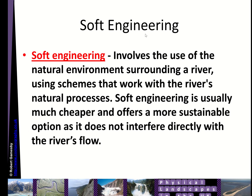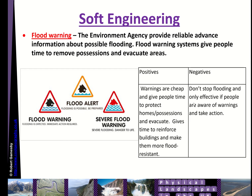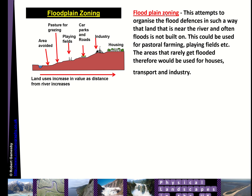Soft engineering is different — it involves the use of natural processes and the natural environment surrounding a river to work with the river's natural processes. It's much cheaper and more sustainable but probably offers less protection than hard engineering. One type of soft engineering is flood warnings. The Environment Agency monitors rainfall and river levels to provide reliable advance information about possible flooding. This gives people time to remove possessions and evacuate. Warnings range from flood alerts to flood warnings to severe flood warnings, which indicate danger to life. The positives are that warnings are cheap and give people time to protect homes; the negative is that they don't actually stop the flooding.